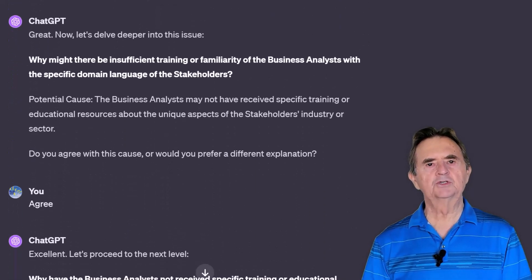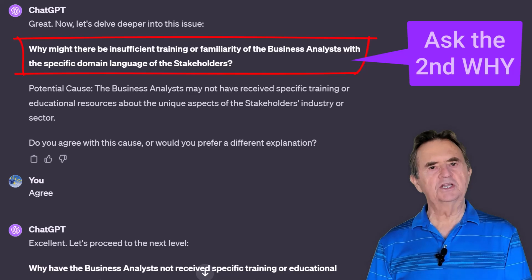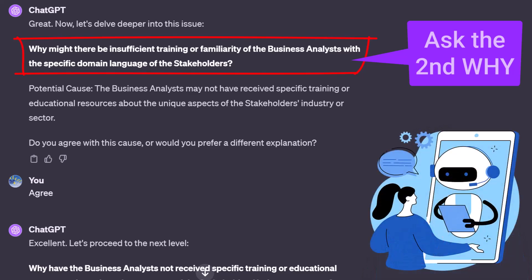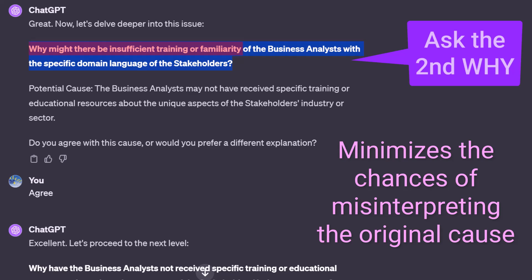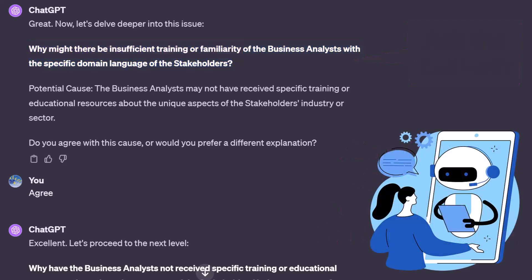The next step is to assume that the cause is correct and ask another why question at this level to identify the cause of that. ChatGPT adopts a clear and direct method, taking the identified cause — insufficient training or familiarity — and prefacing it with 'why might there be?' This tactic aligns with common practices among many business analysts, so it minimizes the chances of misinterpreting the original cause and potentially confusing the stakeholder. ChatGPT proposes the cause that business analysts may lack specific training or educational resources regarding the distinctive features of the stakeholder's industry or sector. I agree.